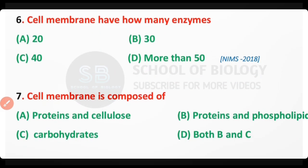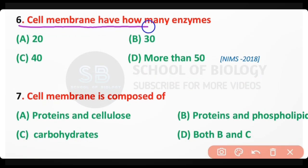Question six: Cell membrane has how many enzymes? Options: 20, 30, 40, or more than 50. The correct answer is option B. Thirty different types of enzymes are present in the cell membrane.